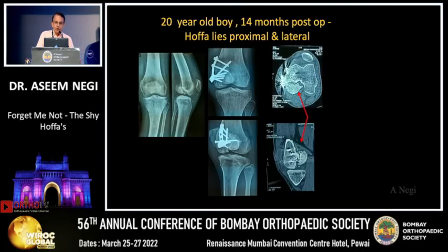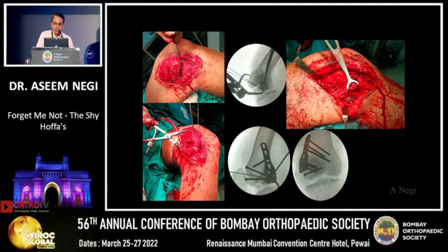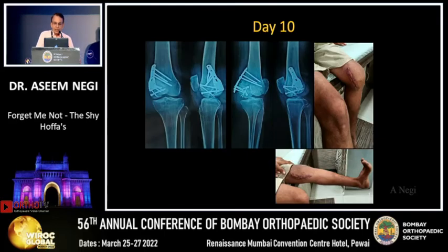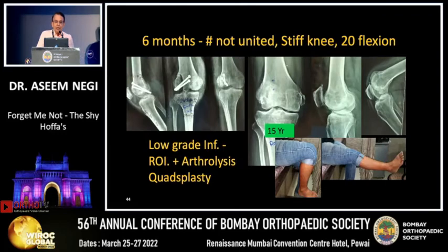Same-day evening surgery and at nine months follow-up his function is excellent. Another case: a 20-year-old boy — same story. The plate had missed the Hoffa element. Osteotomy done, reconstruction performed, and he achieved almost 100 degrees of flexion. A young patient with a lateral femoral Hoffa fixed only with lag screws — six months down the line the fracture had not united, stiff knee with only 20 degrees of flexion.